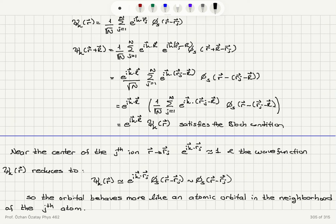and so we're going to have the wave function reducing to e to the i k dot rj phi s of r minus rj so r is equal to rj.